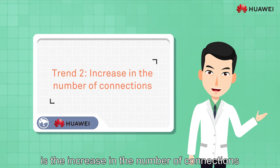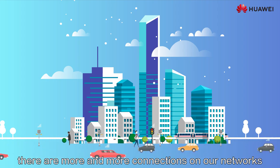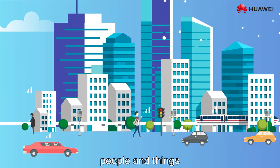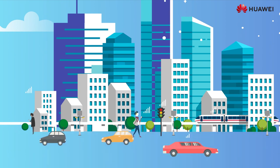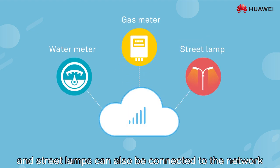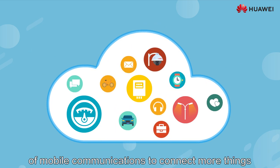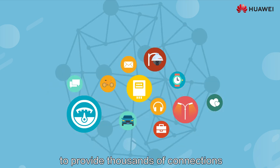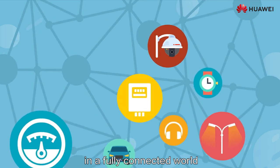The second trend is the increase in the number of connections. With the development of smart cities, there are more and more connections on our networks. In addition to people's connections, people and things, and things and things, are gradually connected. Water meters, gas meters, and street lamps can also be connected to the network. This requires mobile communications to connect more things. Although 4G can enable each cell to provide thousands of connections, it cannot meet the connectivity needs of everything in a fully connected world.